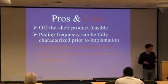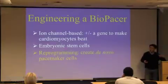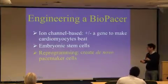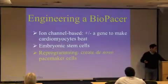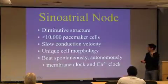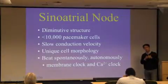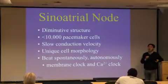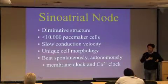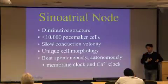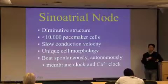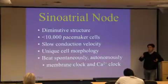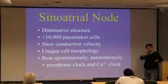The last approach — the most exciting to us — is the reprogramming approach to create novel pacemaker cells. The sinoatrial node is a fascinating structure. The whole heart has a little more than 10 billion cells: a little less than 5 billion are muscle cells, and 5 to 6 billion are non-myocytes. The pacemaker cells in the SA node number less than 10,000. To put this in perspective, less than a few thousand pacemaker cells in the SA node can pace the entire heart — it's a diminutive but highly specialized structure.